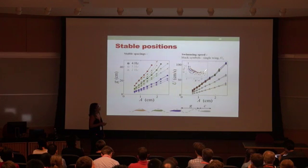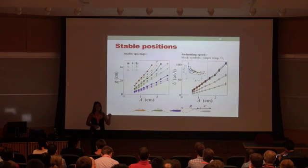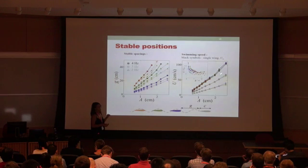And actually that speed enhancement shows better in that inset that shows the comparison of the speed. You can see that you can have an enhancement up to 25%, especially when the wings are close together. This is as a function of the spacing here.